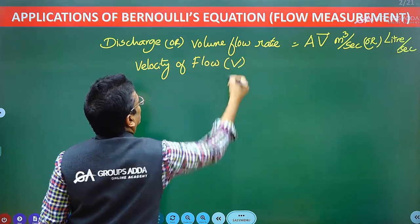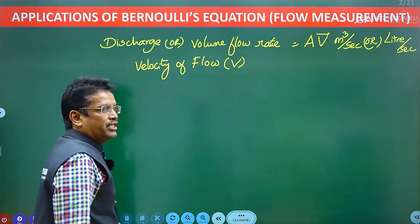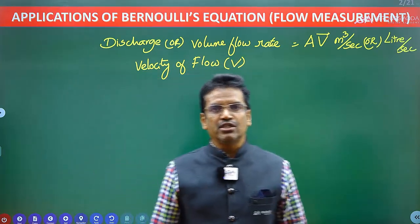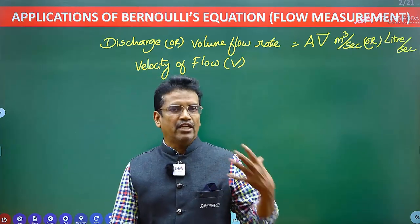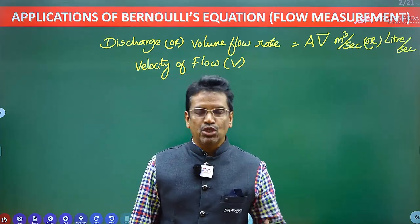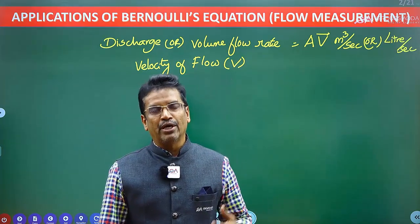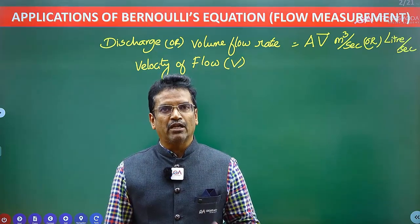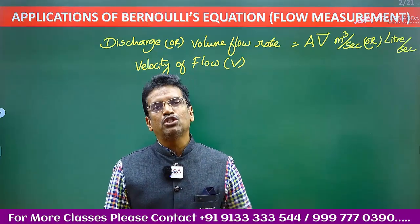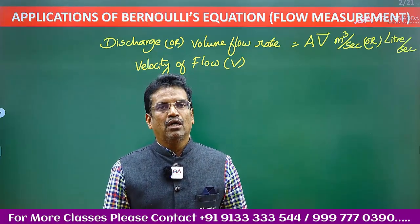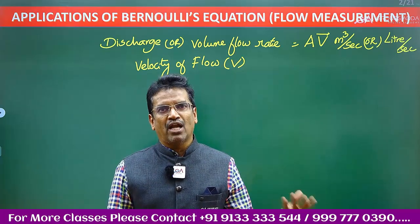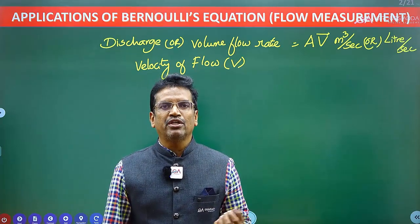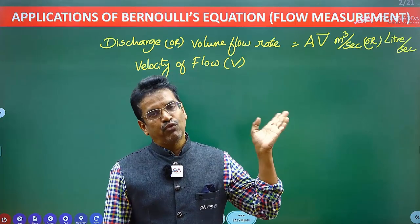Discharge or velocity can be measured by using applications of Bernoulli's equation — that is, by using various instruments like venturimeter, orifice meter, pitot tube, and current meter. These instruments are widely used in fluid mechanics laboratories for measuring either flow rate or velocity of flow.